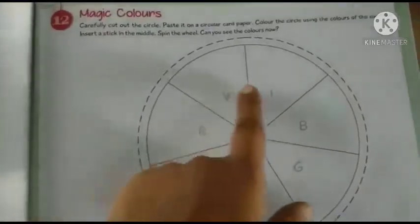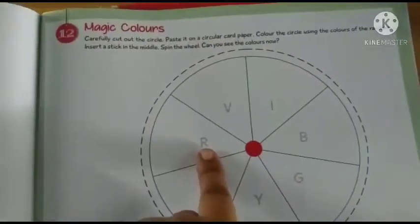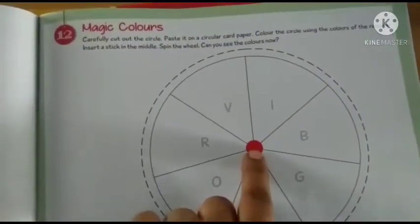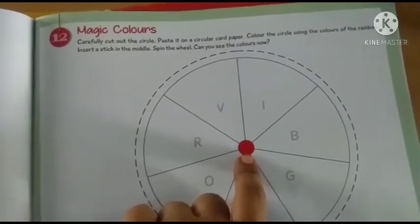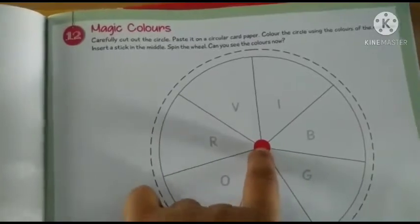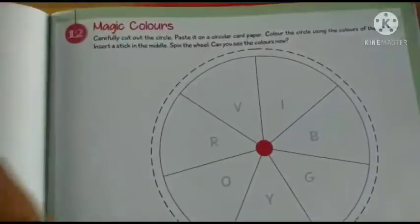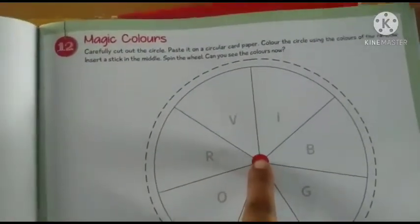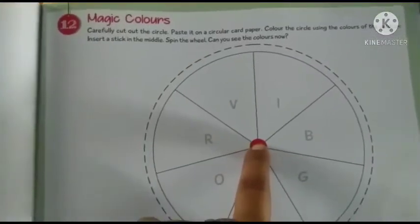To yaha pere jho dis. Phir aapne yaha pere jab color karthay ho, uske baat me middle me ek stick leekar yaha pere dalni hai. Beech me se ek stick, choti si stick leekar aapko yaha se middle me lagani hai. Phir uske baat spin the wheels.